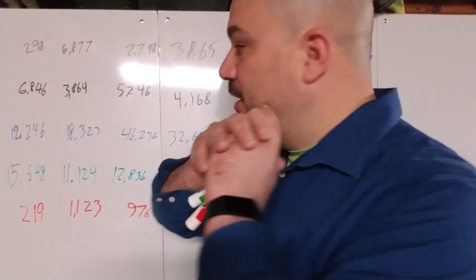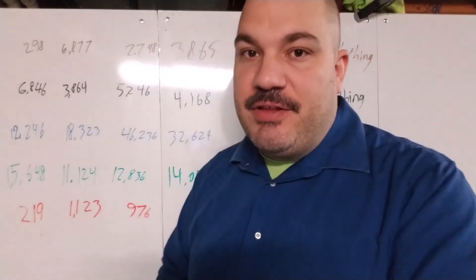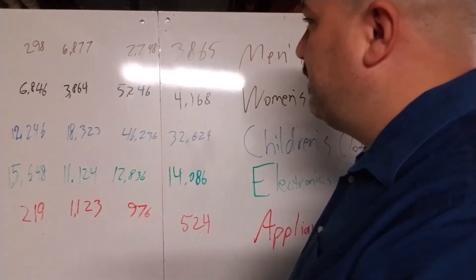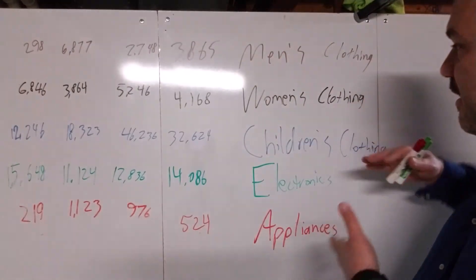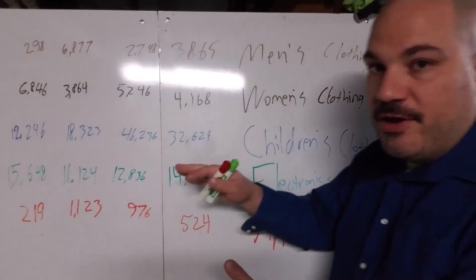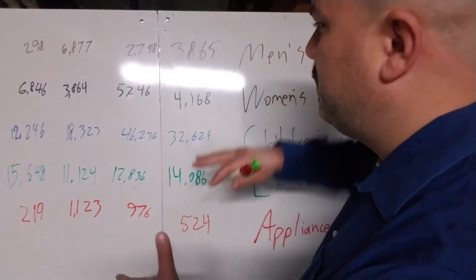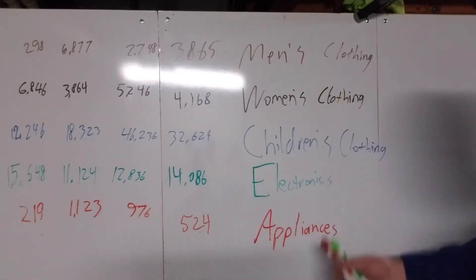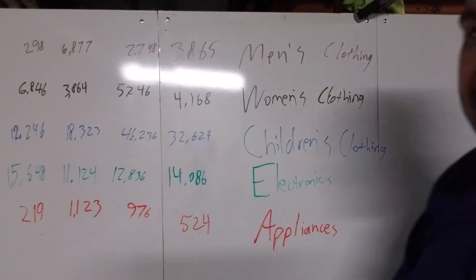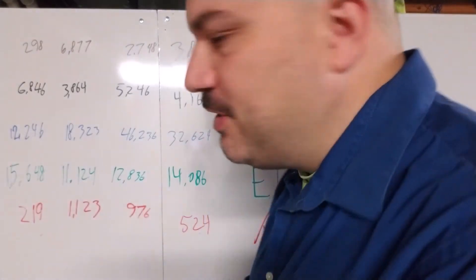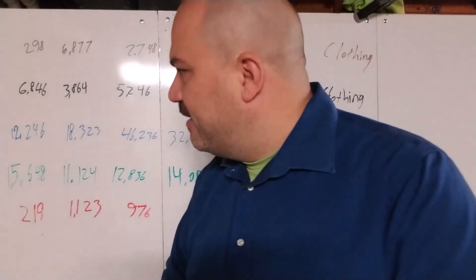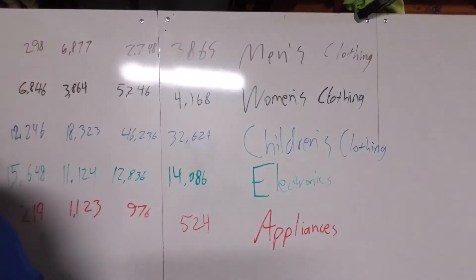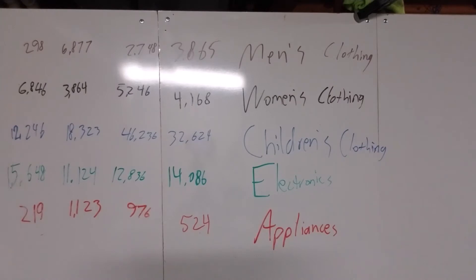We have this nice little example: a week's worth of web page sectional views for a department store — men's clothing, women's clothing, children's clothing, electronics, and appliances. These are just ideas out of my head. What we have here is a daily average.